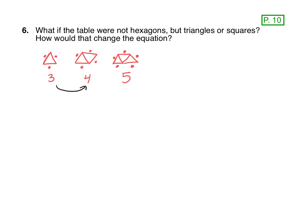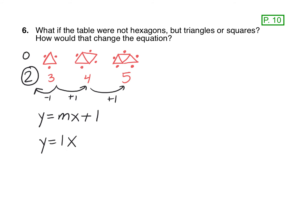So you can see a pattern again with the triangle table — each time it's going up by one. Now if I was to go back to the zero table, because that's going to help me with my y-intercept, think about if you go back by one, that would be two. So there's my y-intercept, there's my b. If I think y equals mx plus b, m is the rate of change which is one, and b is the y-intercept which is two. So our equation for triangle tables would be y equals 1x plus 2.